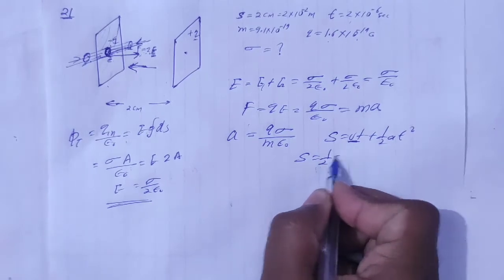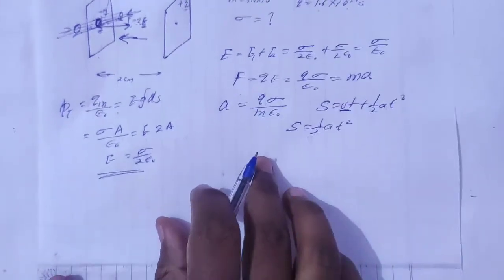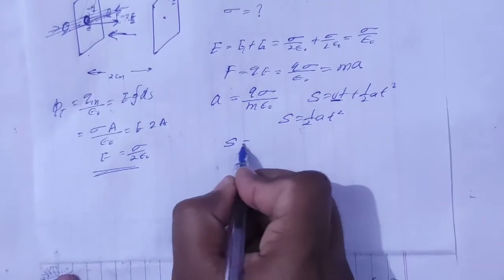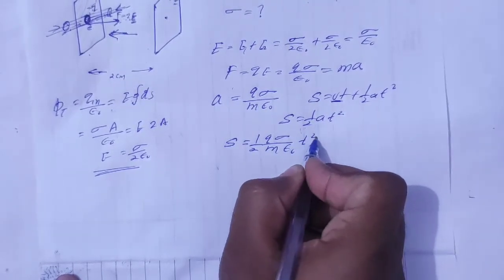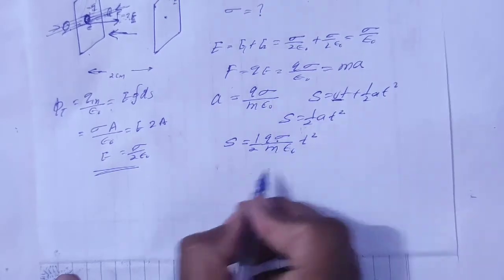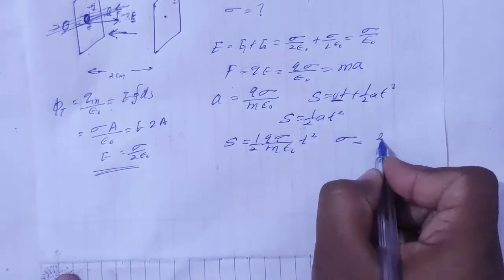Then s is equal to half at square. Yaha pe value put karo s distance apna a kitna hai q sigma m epsilon naught t square. Hume find karna hai sigma to sigma is equal to kaya liksakta hai 2m epsilon naught s, 2m epsilon naught into s upon q into t square.